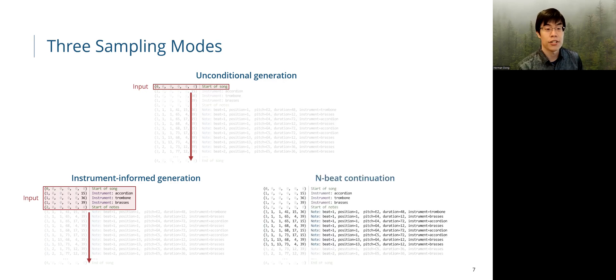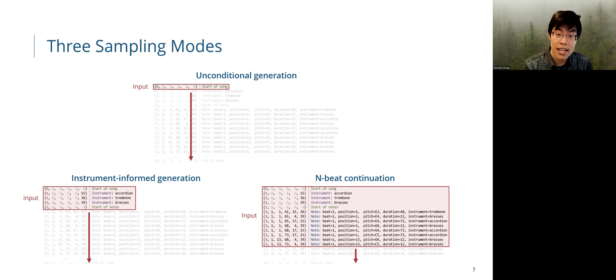Third, we can also do n-beat continuation, where we provide the list of instruments and notes in the first n beats of the music, so the model will continue the song. I want to emphasize again that we only need to train one single model to achieve all these tasks.